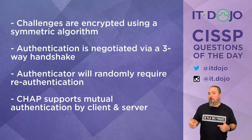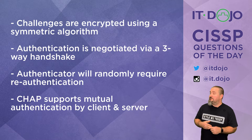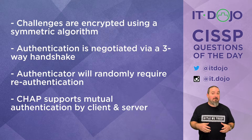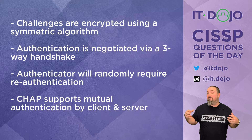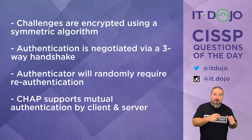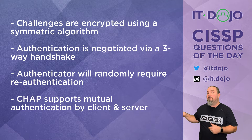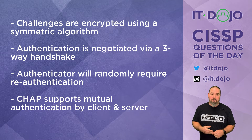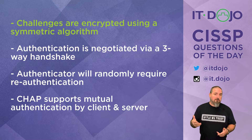When you hash something you cannot decrypt it, you can only repeat it. So I can hash the stuff on my side and you can hash the stuff on your side, and if we both get the same value then we know it's correct. I'm not going to encrypt something, send it to you, and have you decrypt it — that is not how CHAP works. So that's the correct answer here.